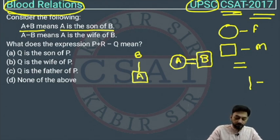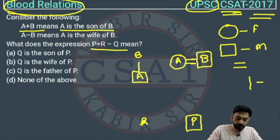Now the question is asking what the expression P plus R minus Q means. We will draw P plus R. P will be male from the first statement. P will be the son of R. The gender of R is not given yet.